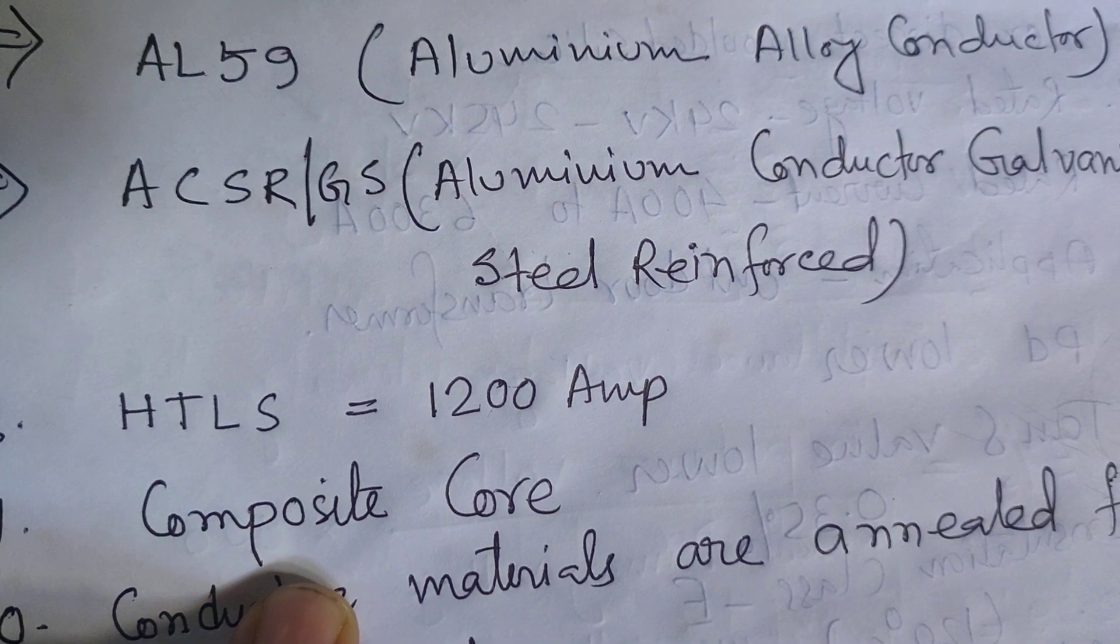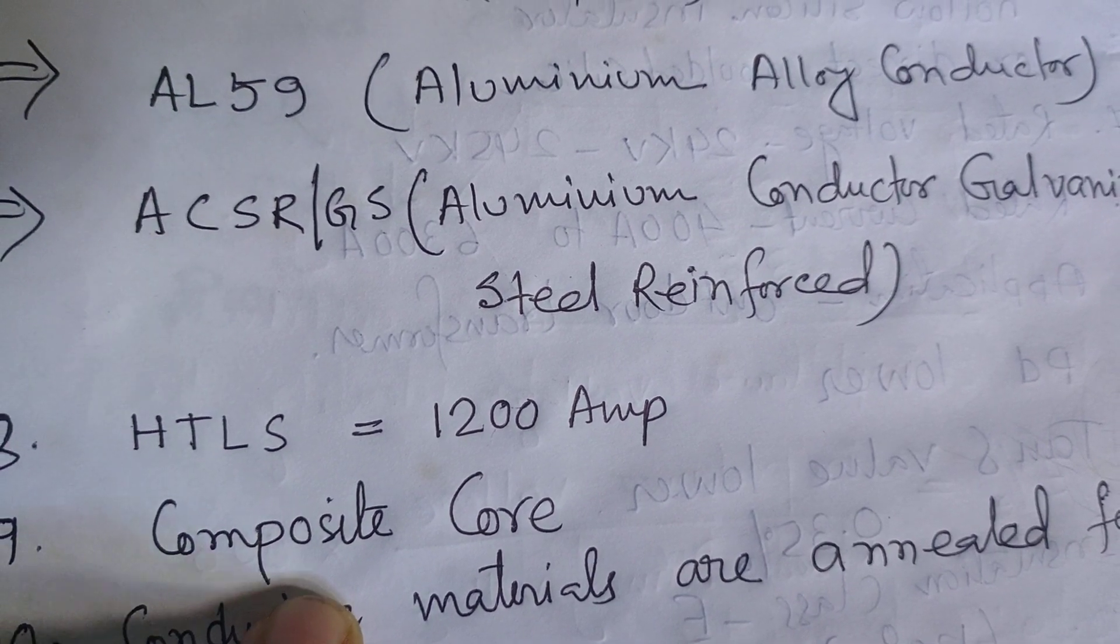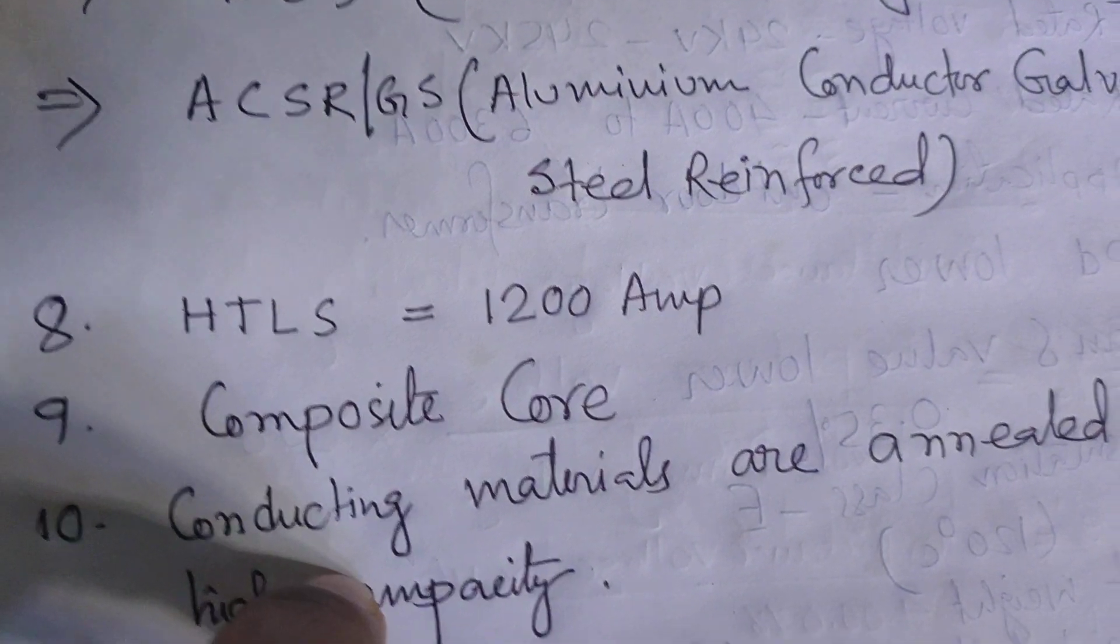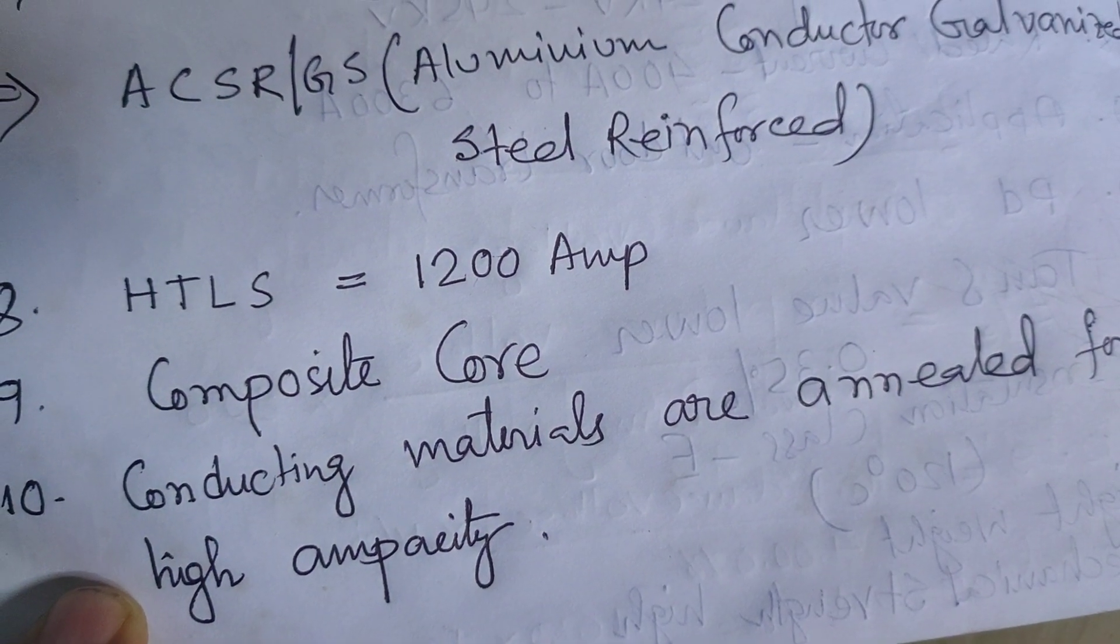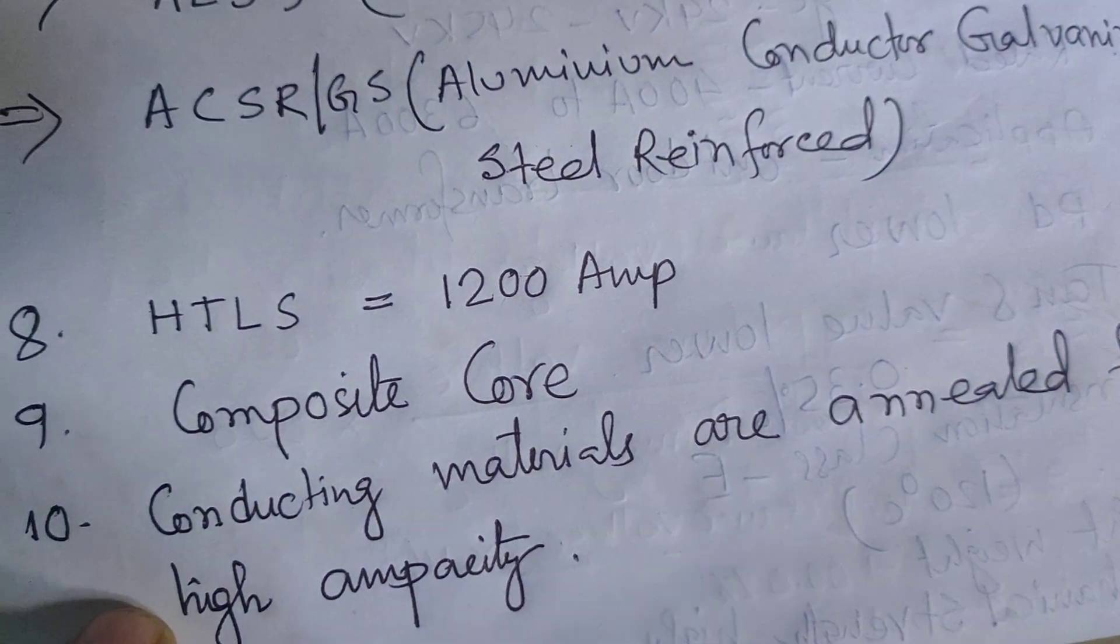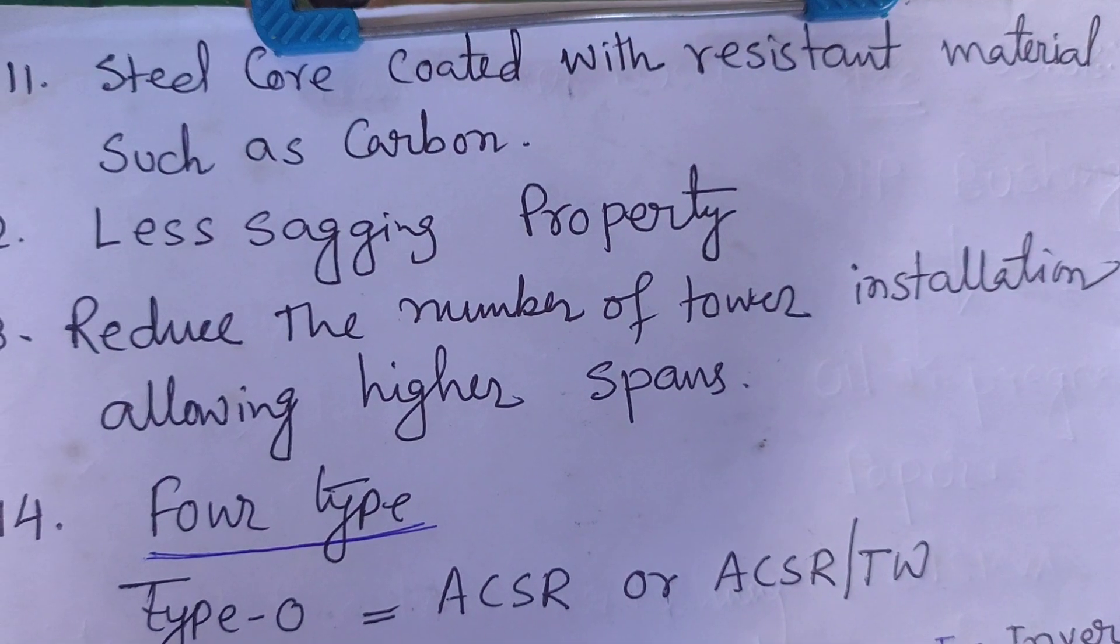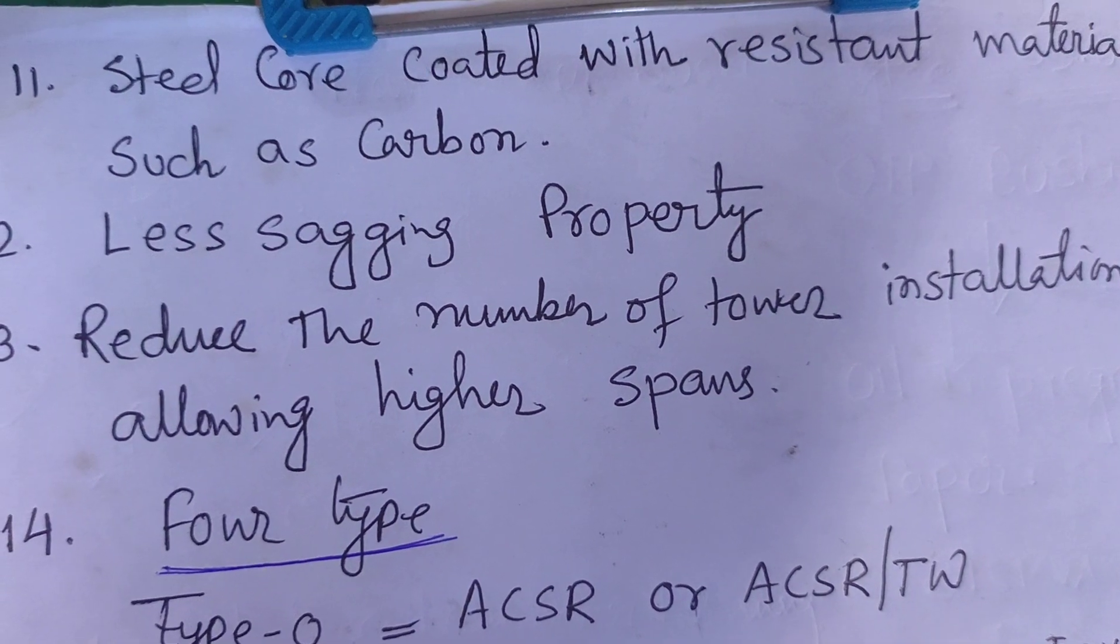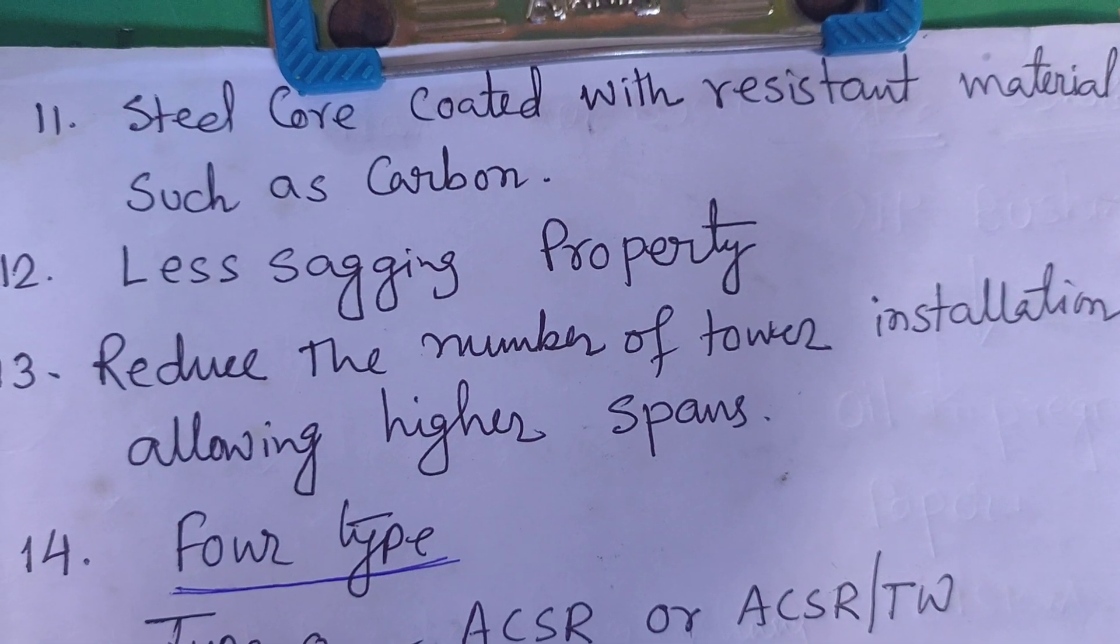It has a composite core, so conducting materials increase the high ampacity. We will discuss annealing later. The steel core is coated with resistant material such as carbon. The composite core is formed inside with carbon composite.